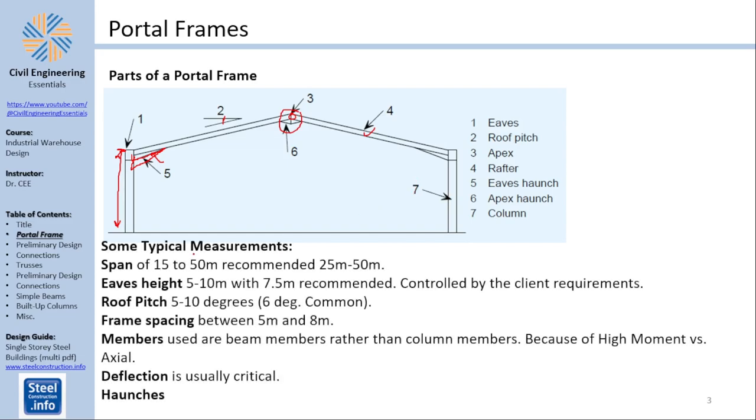Now those parts have typical measurements. This span is usually between 15 to 50 meters, so the span here is we're talking about this distance, the in-plane span. It's recommended between 25 and 50, but the typical span is between this and this. Now why is it recommending those spans? I think I messed up this number, I think it's 35. Check the reference. It's recommending those numbers because it seems to be more economical to do portal frames in those ranges. The eaves height is between 5 and 10 meters with 7.5 recommended. This is controlled by client requirements as well as any crane requirements if you have some. For example, if you have airbus hangar, of course, your eaves is going to be much more than 7.5 meters because you are building aircraft here.